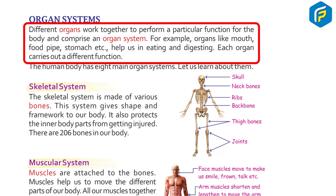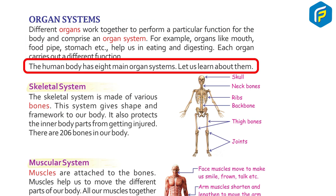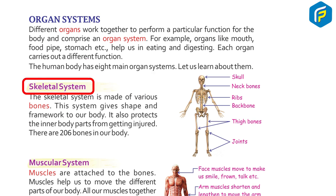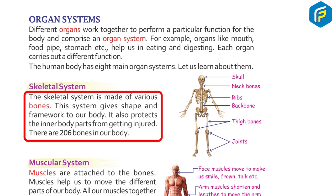Different organs work together to perform a particular function for the body, comprising an organ system. For example, organs like the mouth, food pipe, and stomach help us in eating and digesting food. Each organ carries out a different function. The human body has eight main organ systems. The skeletal system is made of various bones, which give shape and framework to our body.